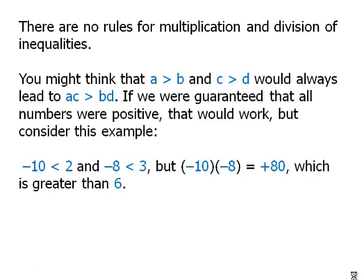There are no rules for multiplication and division of inequalities. Again, it always results in mathematical nonsense. You cannot do it. You might think that if a were greater than b and c were greater than d, it would always lead to a times c is greater than b times d. Why wouldn't it be that big times big is always greater than small times small? If we were guaranteed that all the numbers are positive, then that would work, but consider this example.